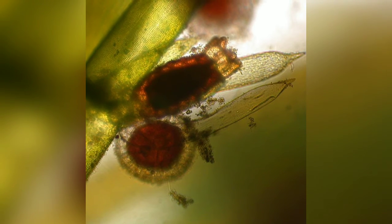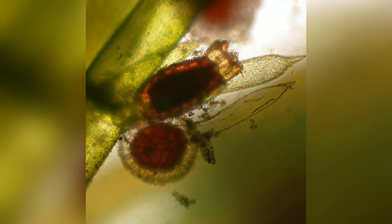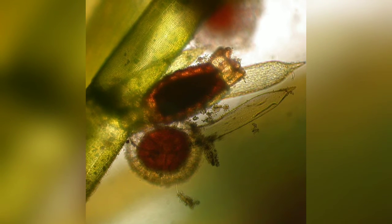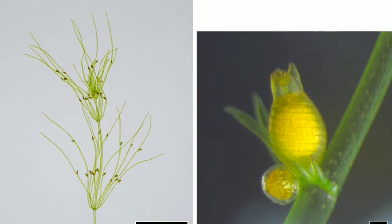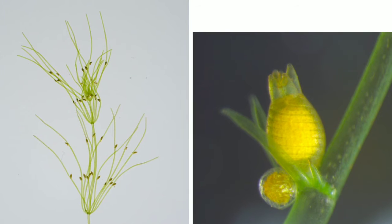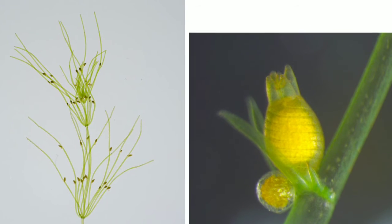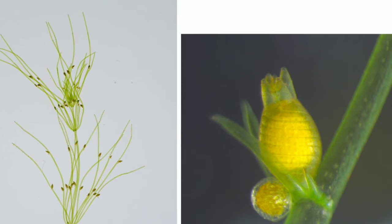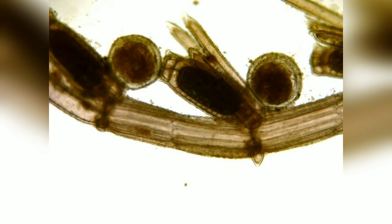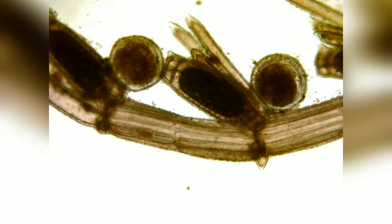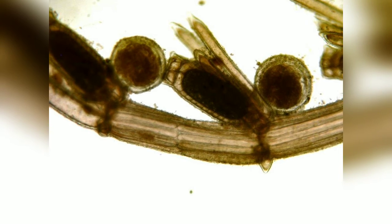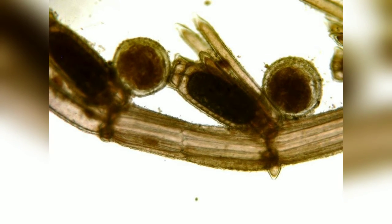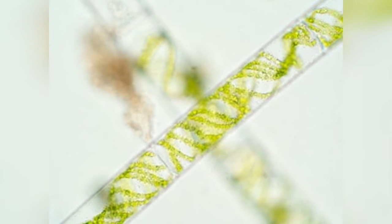Chara can also reproduce through vegetative mode using root bulbils. On the rhizoids of Chara aspera, some oval or spherical bulbils develop. On being detached from the parent plant, bulbils germinate to form a new plant. In Chara baltica, bulbils develop on nodes of the main axis and also act as perennating organs.